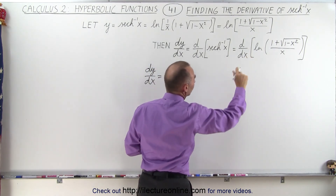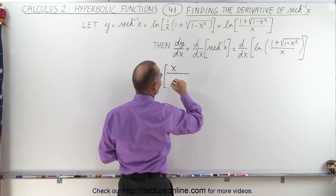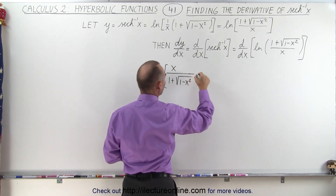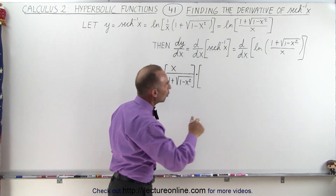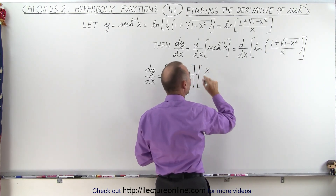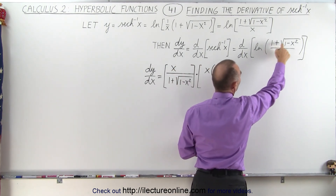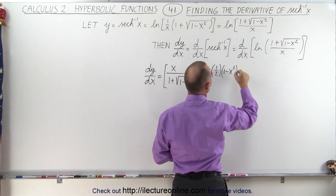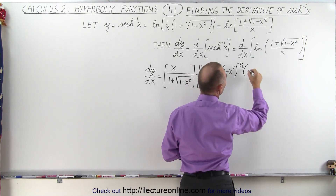First, we take the derivative of the natural log, which means we invert its argument. So we have x divided by 1 plus the square root of 1 minus x squared, times — using the quotient rule on what's inside — the denominator times the derivative of the numerator. The derivative of 1 is 0, so we get one-half times 1 minus x squared to the negative one-half power, times the derivative of what's inside, which is minus 2x.